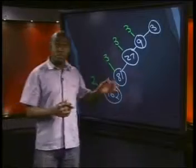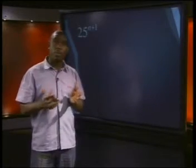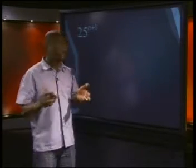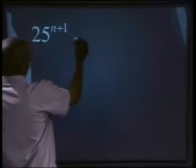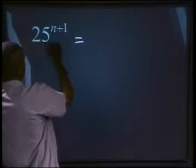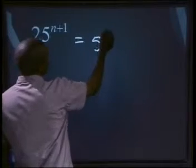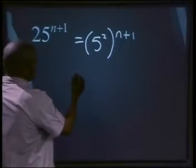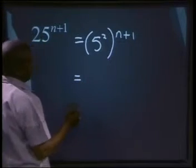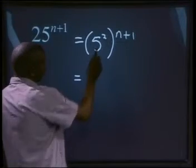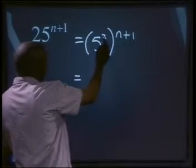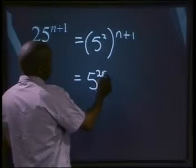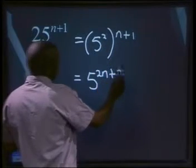Now let's write 25 to the power of n plus 1 as a power with a prime base. Prime factorize 25 and write the power in brackets. 25 is the same as 5 to the power of 2, all to the power of n plus 1. Which will be equal to — using our distributive law — 2 times n and 2 times 1. So our answer will be 5 to the power of 2n plus 2.